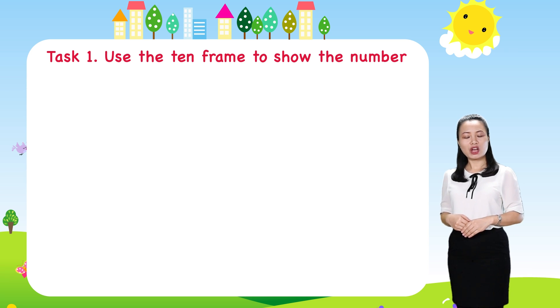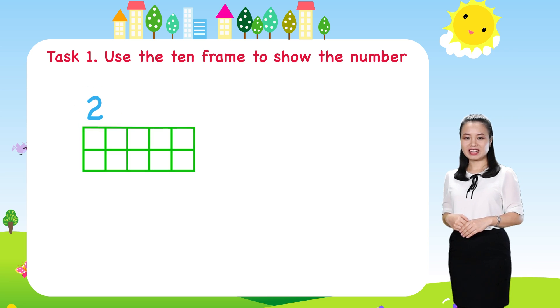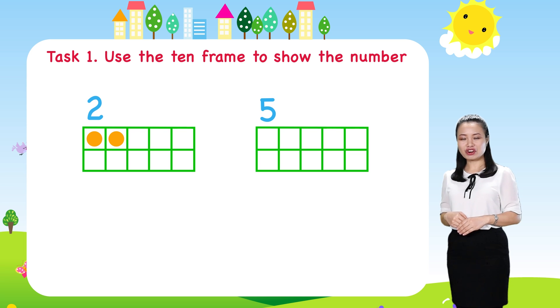First, to show number 2, draw 2 dots in the 10 frame. Next, to show number 5, draw 5 dots in the 10 frame.